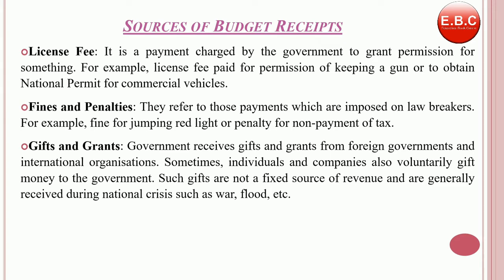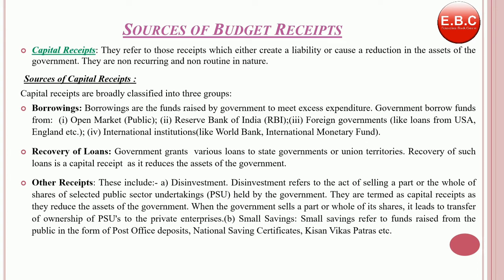The next major head under budget receipts is capital receipts. It refers to those receipts which either create a liability or cause a reduction in the assets of the government. They are non-recurring and non-routine in nature. The main sources of capital receipts are broadly classified into three groups. First, borrowings — these are funds raised by the government to fulfill excess expenditures, mainly from the Reserve Bank of India, open market operations, and foreign governments like loans from the USA, England, etc. Second, recovery of loans — the government grants various loans to state governments or union territories, and the recovery of such loans is a capital receipt.